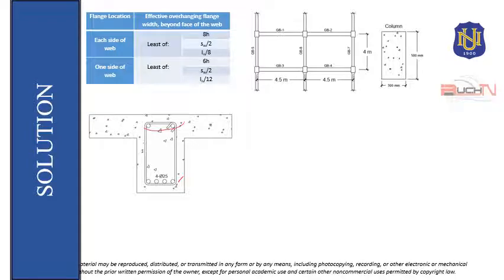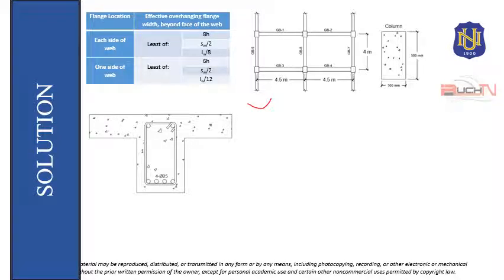We disregard the bars at the top since they are only held by the stirrups. These are tension reinforcement because at mid-span, for a beam supported by columns, the moment is positive. For a positive moment, the moment diagram curves upward, meaning compression is at the top and tension is at the bottom. So we consider this as tension reinforcement. The thickness of slab is 120mm.